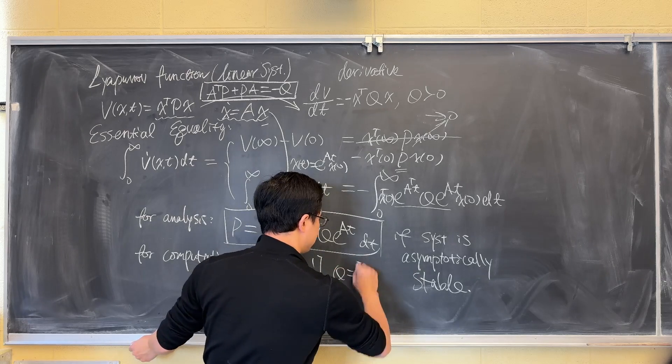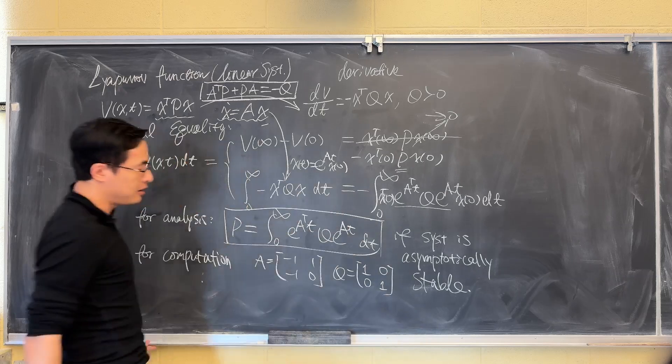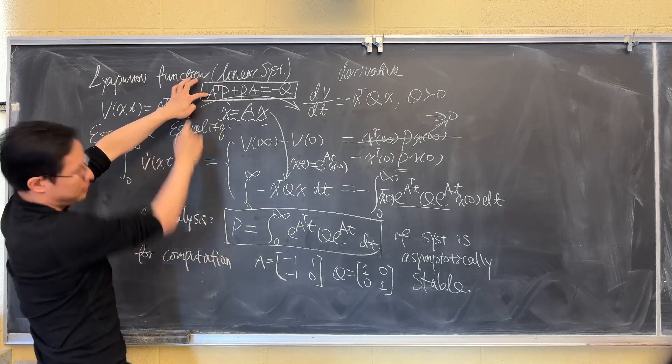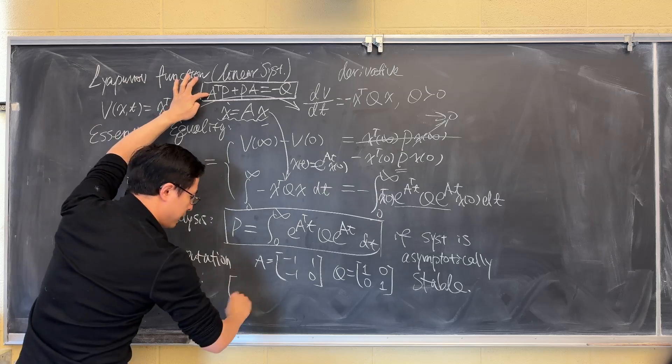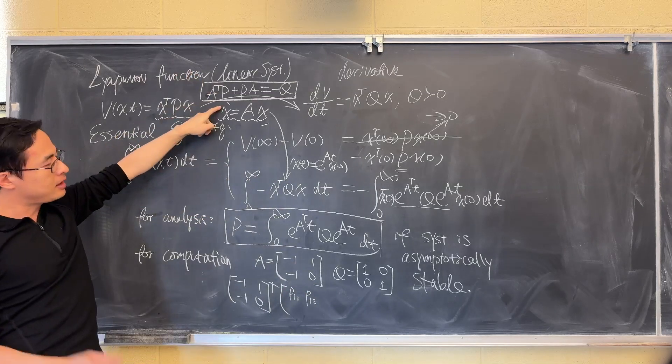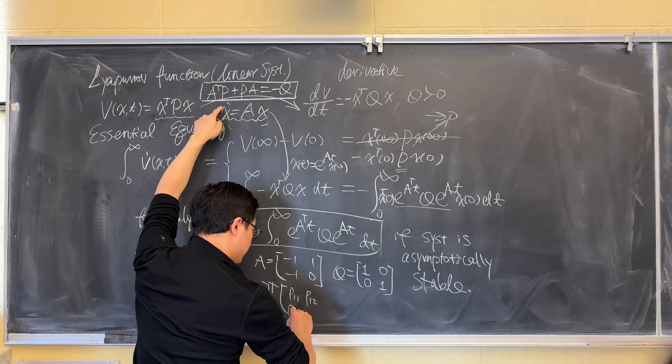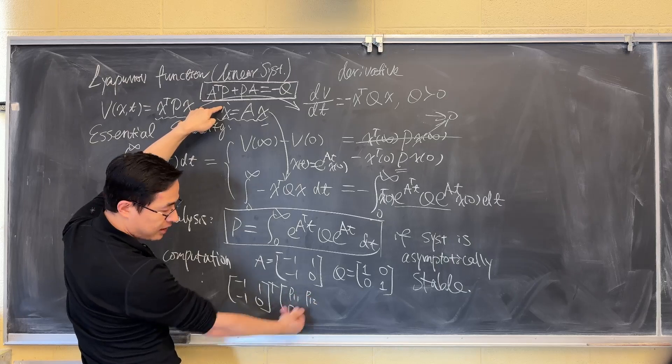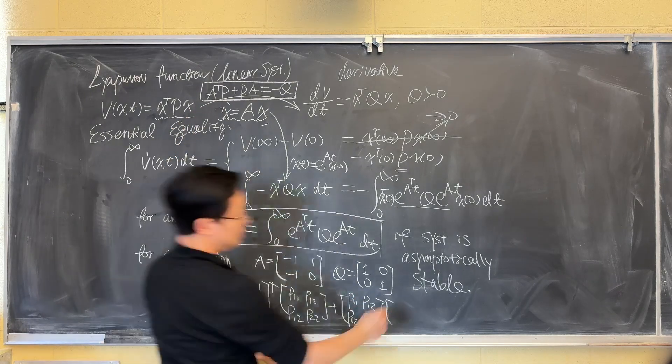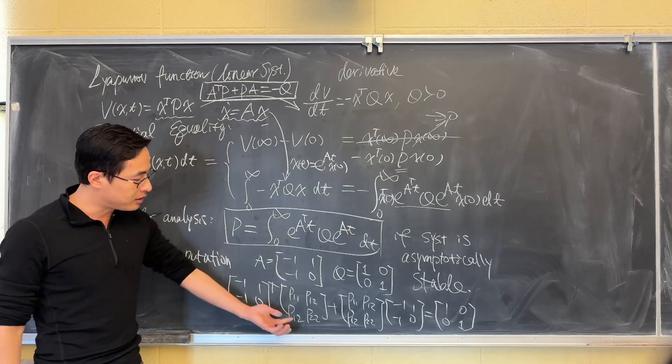So let's say Q is identity. Then we solve P using this Lyapunov equation. We have, so P is 2 by 2, and P is symmetric. So there are only three variables inside. Being symmetric means the off-diagonal elements are the same. So you can just write it this way. So that's one way to numerically solve this.